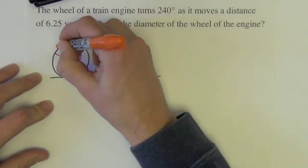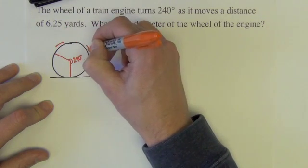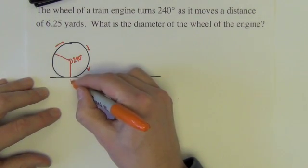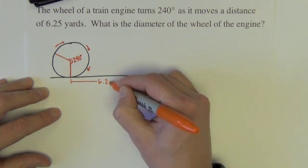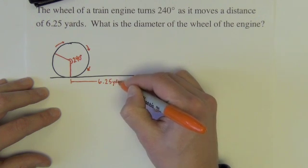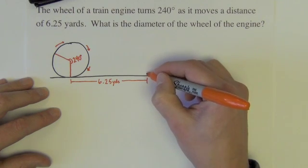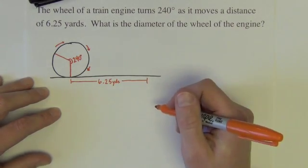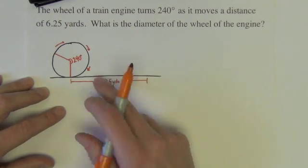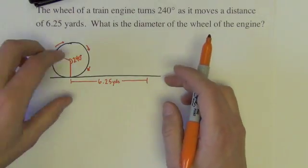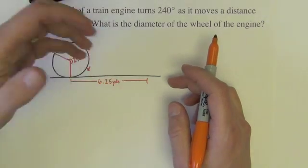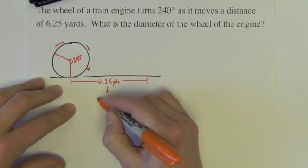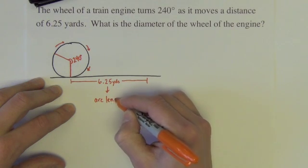And what's going to happen is this wheel is going to rotate 240 degrees. And as it does, it moves a distance of 6.25 yards. And it'll end over here. So the question being asked then, what's the diameter of the wheel of that engine? Well, it's important to realize that this 6.25, what it is is as the circle rotates onto the ground here, that the outer edge of the circle is landing on the ground. This 6.25 yards is an arc length.